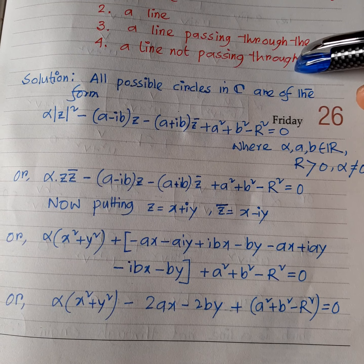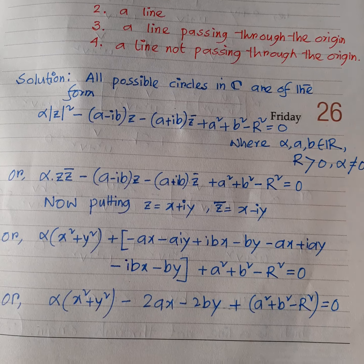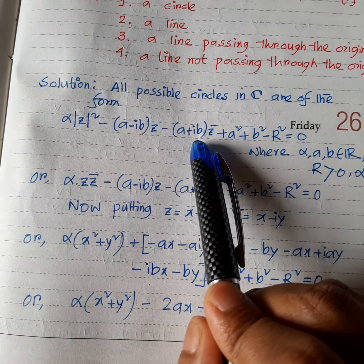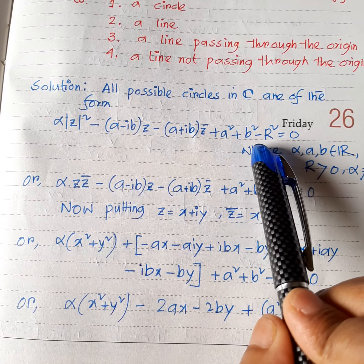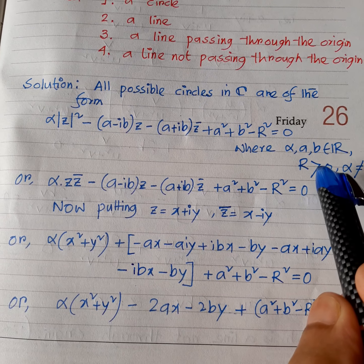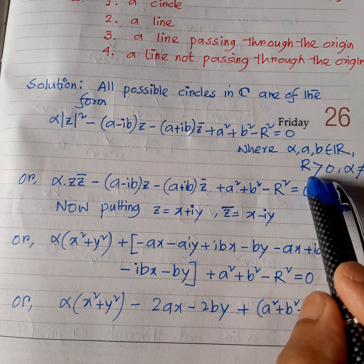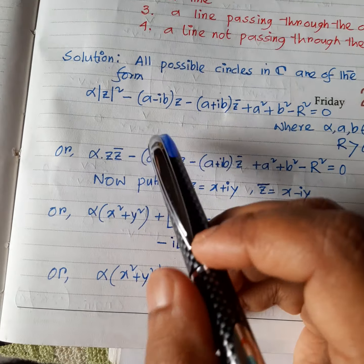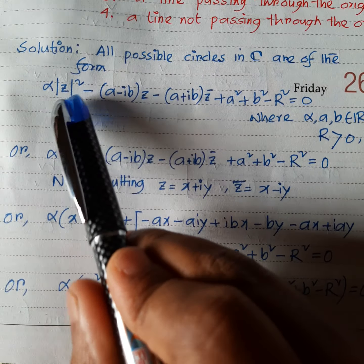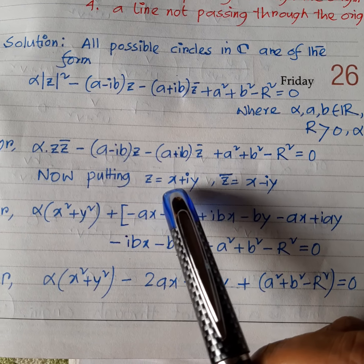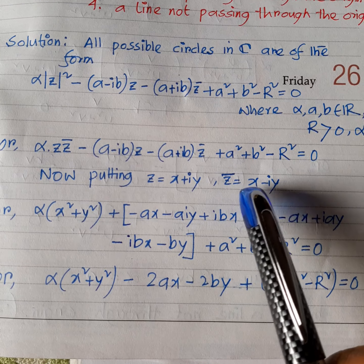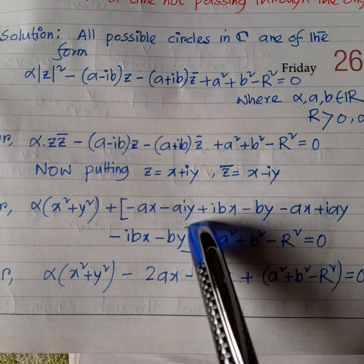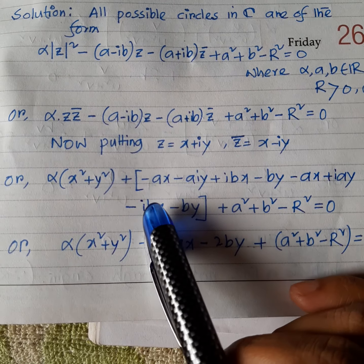Now let's see how the solution comes algebraically. All possible circles in the finite complex plane C can be put in the form: α|z|² − (a − ib)z − (a + ib)z̄ + (a² + b² − r²) = 0, where α, a, b are real numbers and α > 0. In the above expression, we put |z|² = z·z̄, then substitute z = x + iy and z̄ = x − iy.